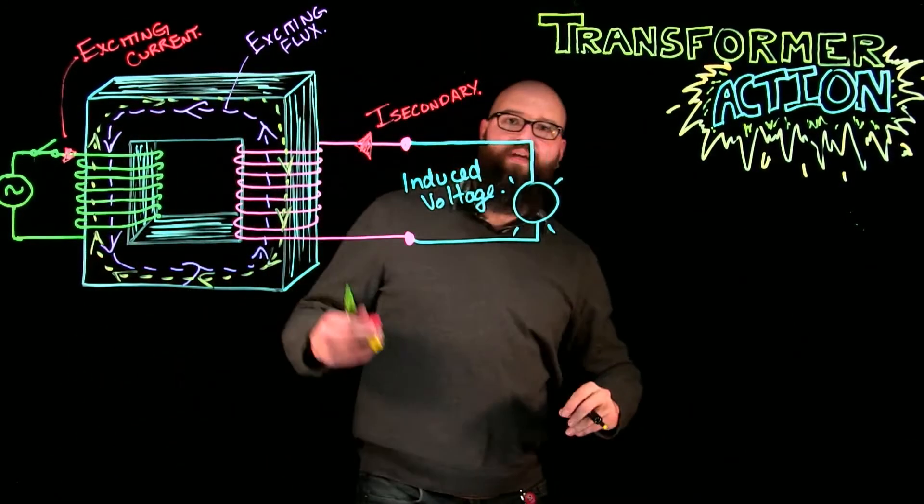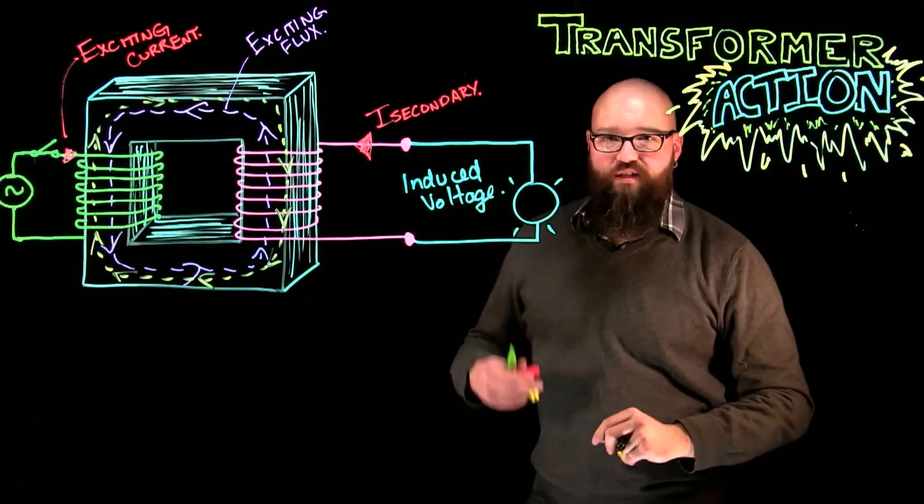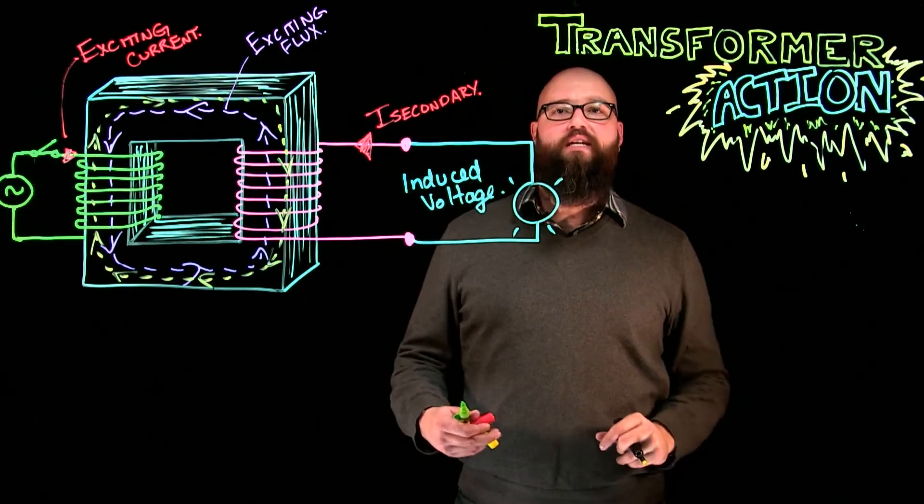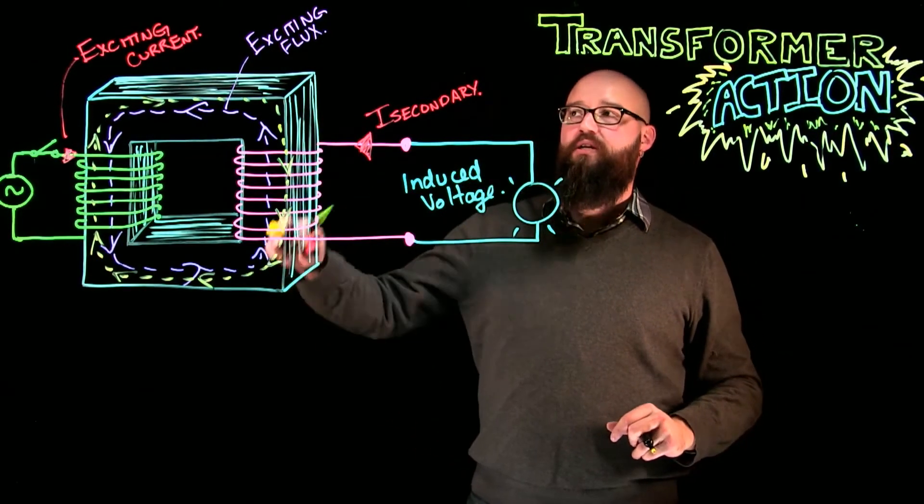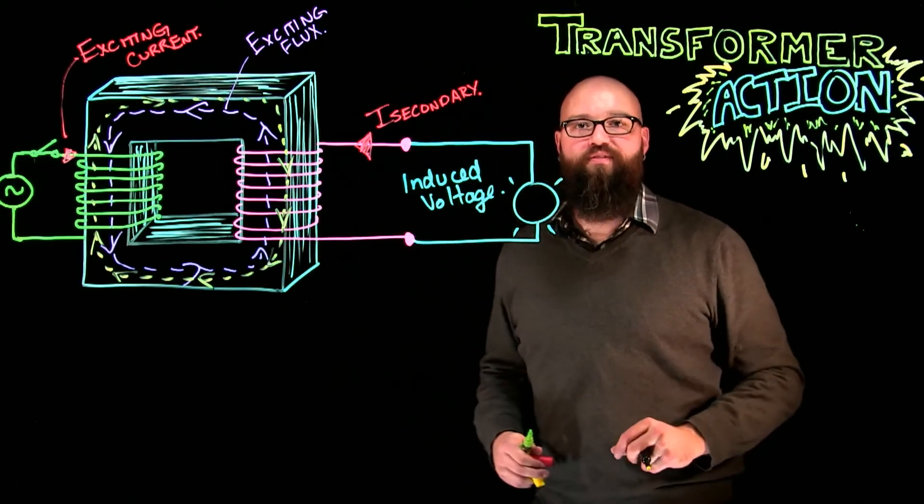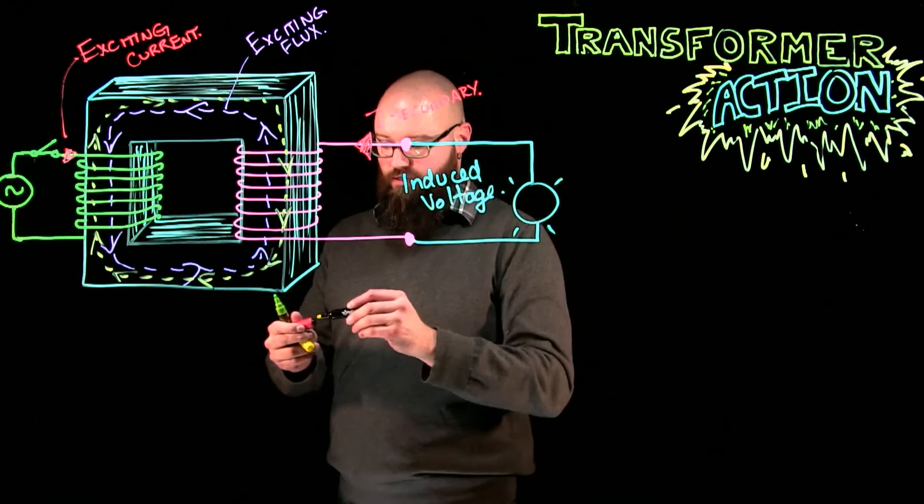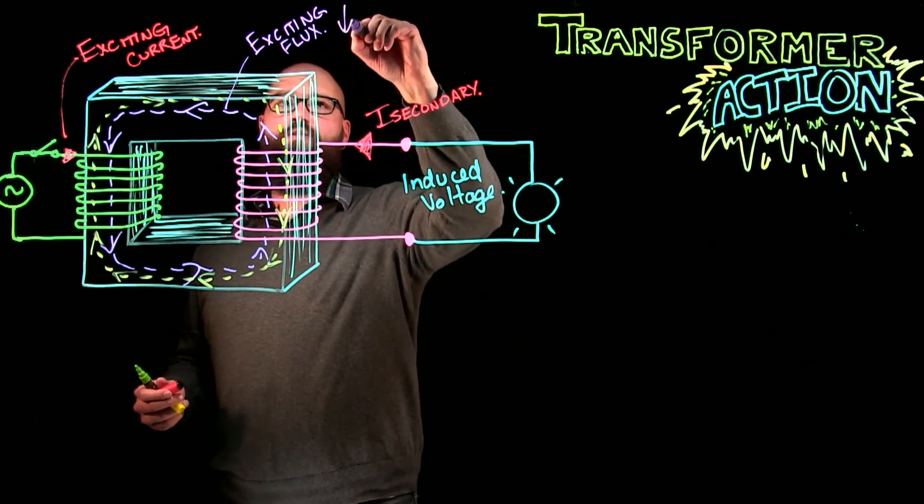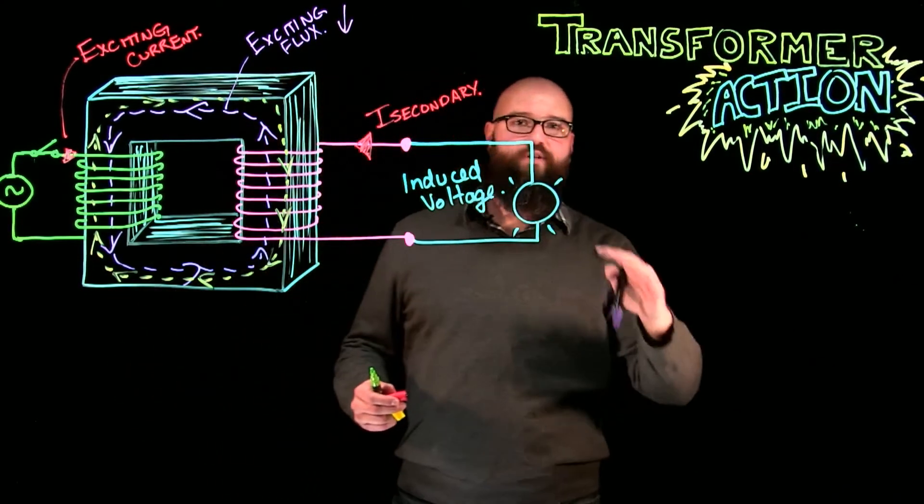So, think about that for a second. I have this secondary flux which is created that's in opposition to the exciting flux. It's going to cancel out some of the exciting flux. Okay? So, this goes down. Exciting flux is reduced. Remember,